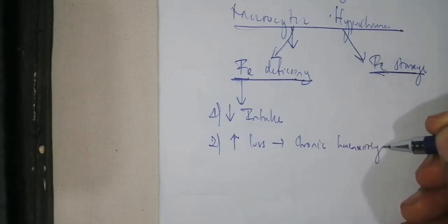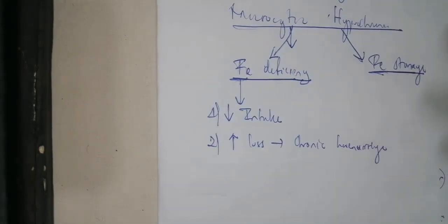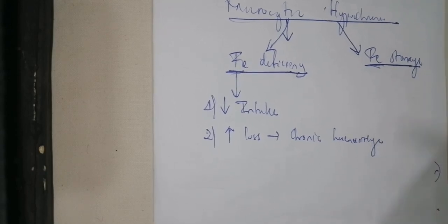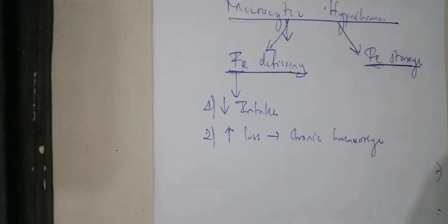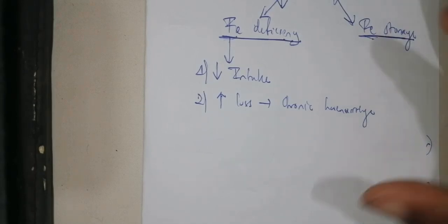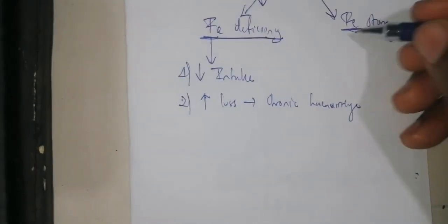When you lose iron over a very long period of time, as in chronic hemorrhage, you are going to develop iron deficiency anemia. So chronic hemorrhage is a major cause of increased iron loss leading to iron deficiency anemia.